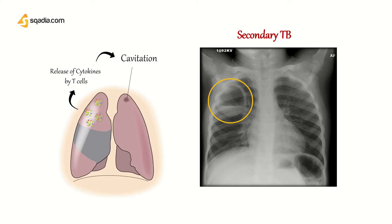The cavitation is seen in the upper lobes. This occurs in the upper lobes because it is more ventilated than perfused. We know that in the ventilation-perfusion ratio of the lungs, the upper parts are more ventilated compared to perfused. Since Mycobacterium tuberculosis is a strict aerob, it prefers to live and infect in the upper lobes of the lungs.